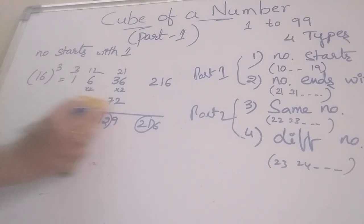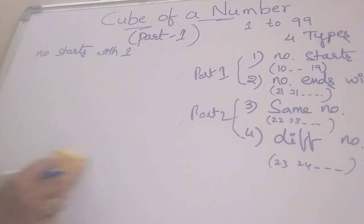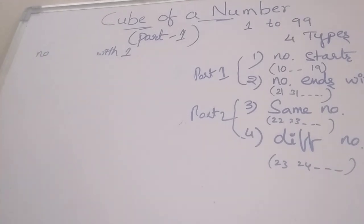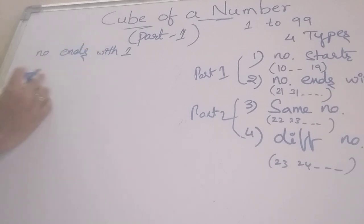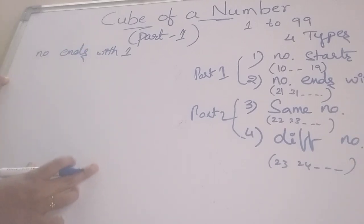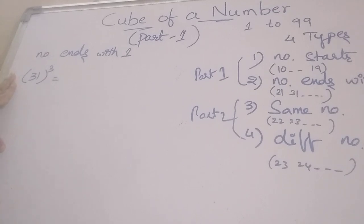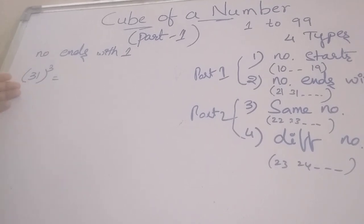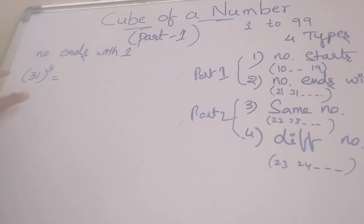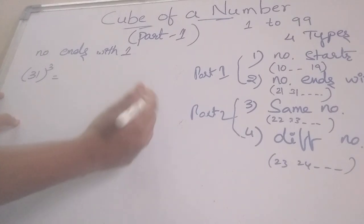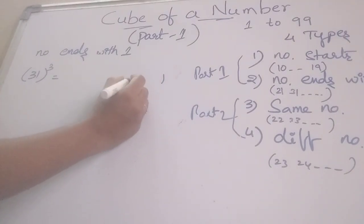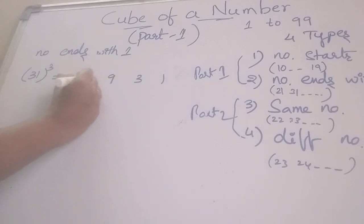Next we move to one more type — the second type. That is the number ends with 1. In this case we solve two problems. First, we find the cube of 31. In this case the problem type is similar but somewhat different. For number starts with 1 we write the numbers to the left side, but in this case we write the numbers to the right side. So we write 1 and 3. What is the square of 3? 9. What is the cube of 3? 27.